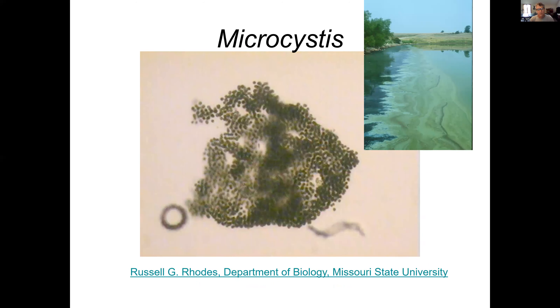Microcystis forms colonies of individual cells inside a gel. This one is really important because it's a toxic cyanobacterium, and it blooms commonly throughout the world and causes problems.